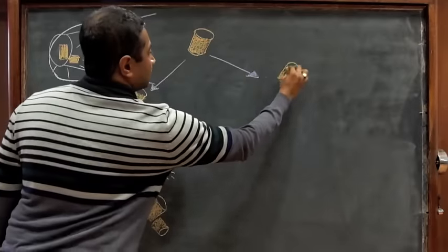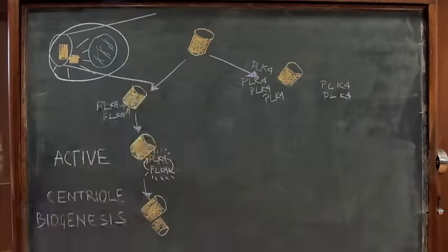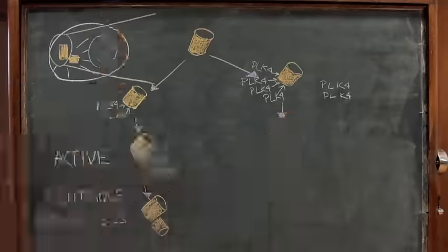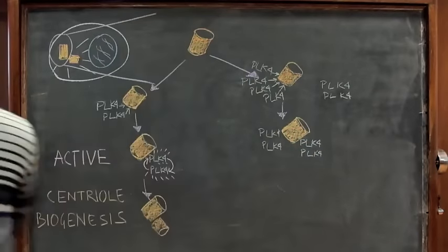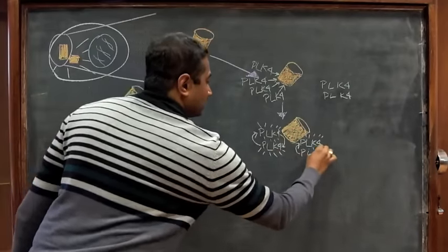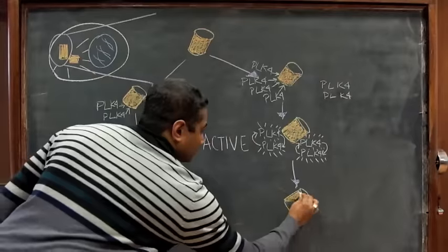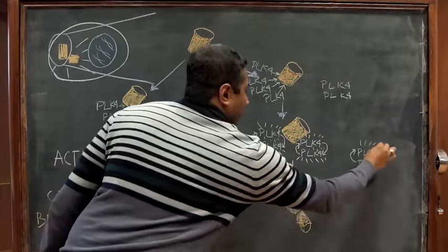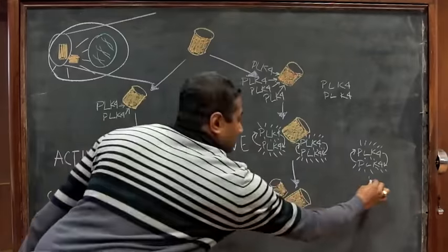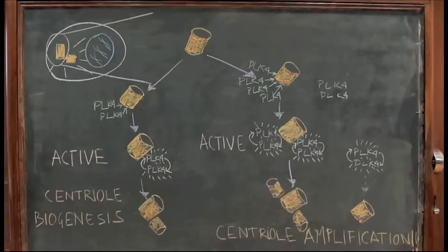However, if PLK4 amount in the cell is more than normal, the centriole will recruit and accumulate more of this protein, leading to the formation of extra centrioles. Also, if there is too much PLK4 protein, in addition to forming centrioles around the pre-existing one, PLK4 can now accumulate, activate and form new centrioles anywhere else in the cell. This can have serious consequences for the cell and the organism.